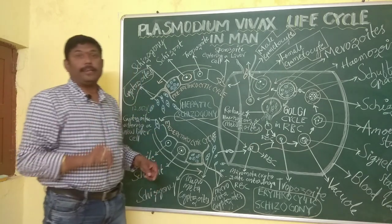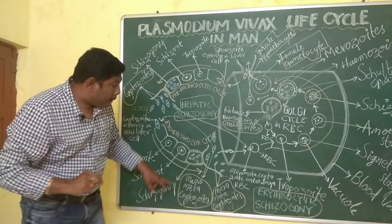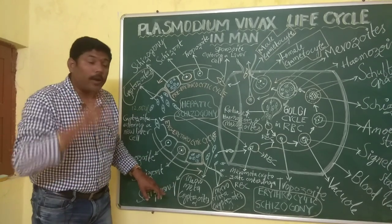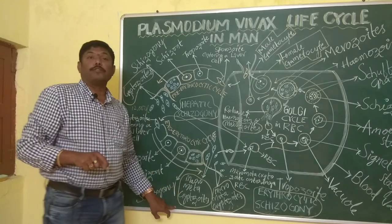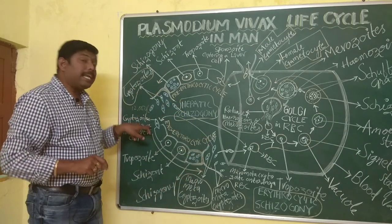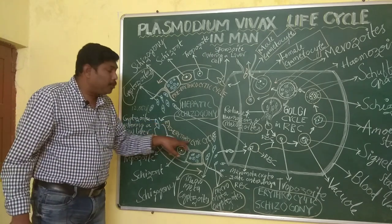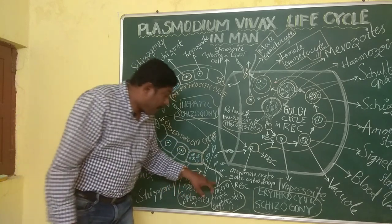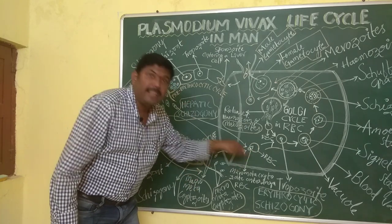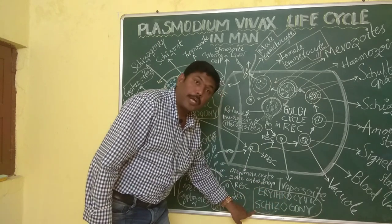As a result, two types of cryptozoites are formed. The cryptozoites which are smaller in size are called micro-meta-cryptozoites, and the cryptozoites which are larger in size are called macro-meta-cryptozoites. The macro-meta-cryptozoites again attack a fresh liver cell and start the exo-erythrocytic cycle, whereas the micro-meta-cryptozoites definitely attack the RBC to complete the erythrocytic cycle or erythrocytic Schizogony.